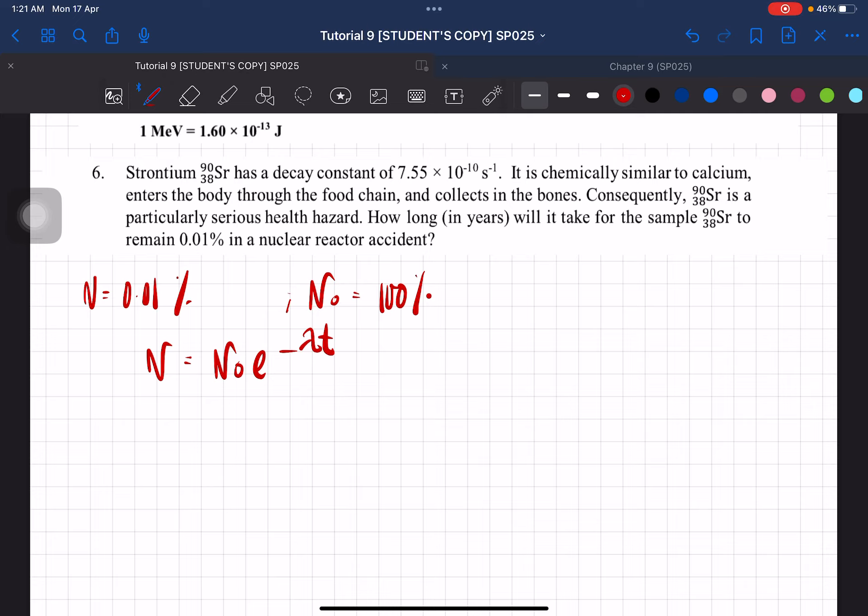Okay, so N is 0.01. So now, it's gonna be 0.01% equal to... oh, I actually don't like to do it that way.